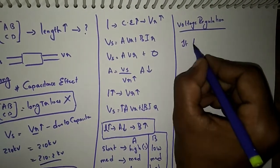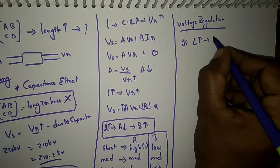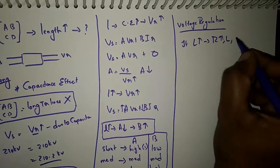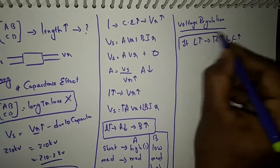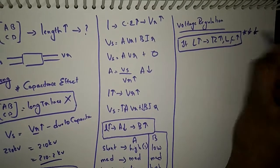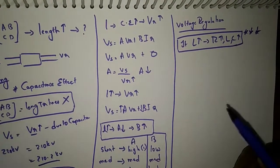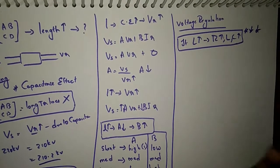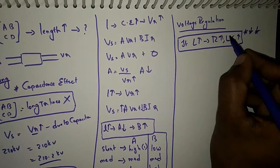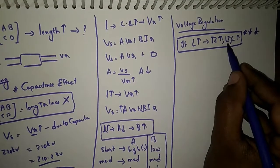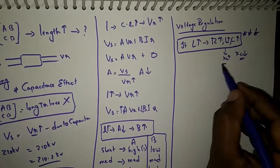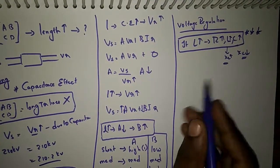As length increases, the resistance, inductance, and capacitance of a transmission line all increase. This is a very important point — exam questions may ask whether inductance increases, decreases, or remains unchanged when length increases. The answer is it increases. Note that inductive reactance XL increases, but capacitive reactance XC decreases with increasing length.